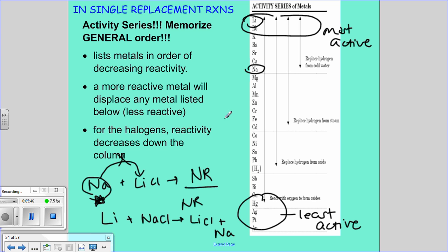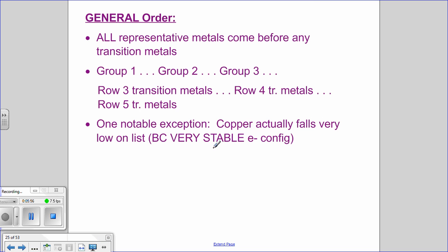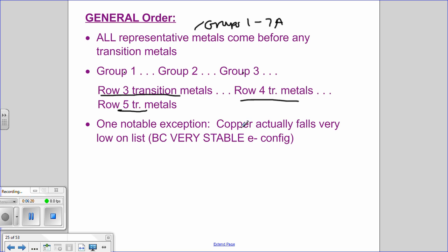There's also a halogen series — use your periodic table: halogens at the top of group 7A are most active, those at the bottom are least active. A helpful hint: all representative metals in groups 1 through 7A are always before transition metals in the activity order — group 1, group 2, then row 3, 4, and 5 transition metals. Be careful though: copper, despite being a row 3 transition metal, is actually very low on the list due to its stable electron configuration.